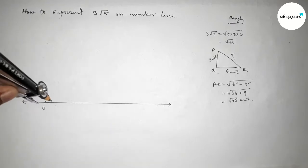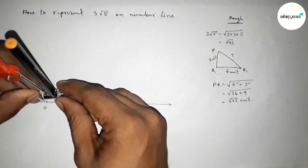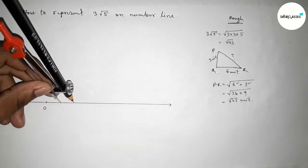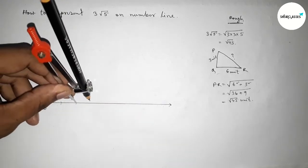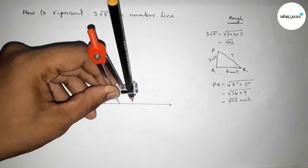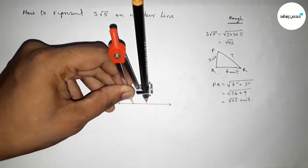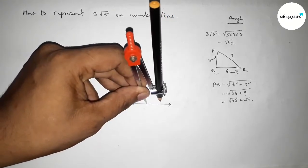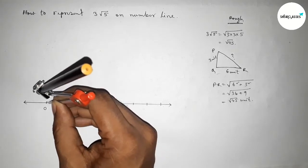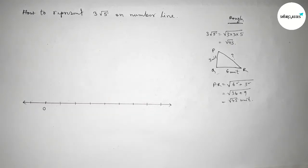Now by using compass and taking any length, mark the numbers on the line. You can use a scale to mark the numbers on the line. Taking any length and marking the numbers on the line by this way, and this length is called one unit length.